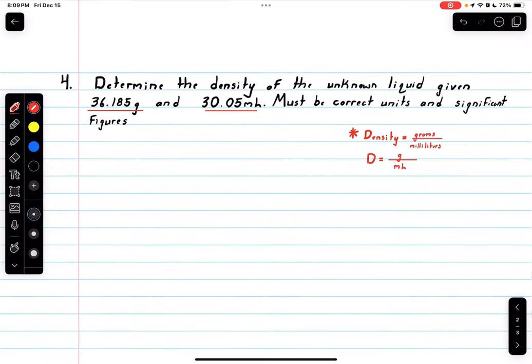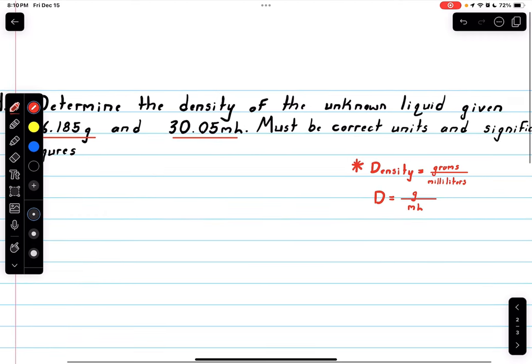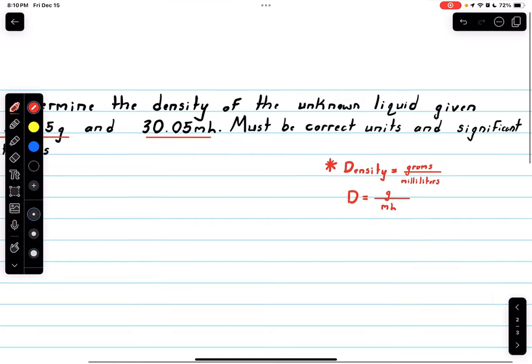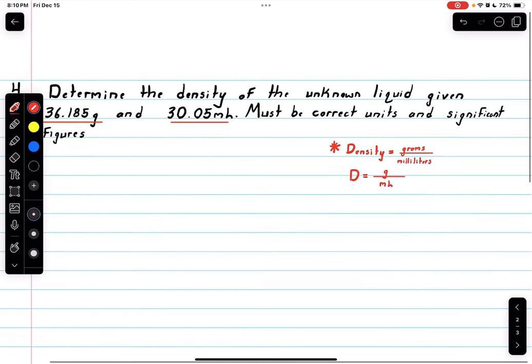Our last one includes density, which is mass over volume or grams over milliliters. We'll see this throughout the course a lot, more so in the beginning. You'll see how the metric units correlate with one another. Determine the density of the unknown liquid, given 36.185 grams and 30.05 milliliters. Must be the correct unit as well as significant figures.